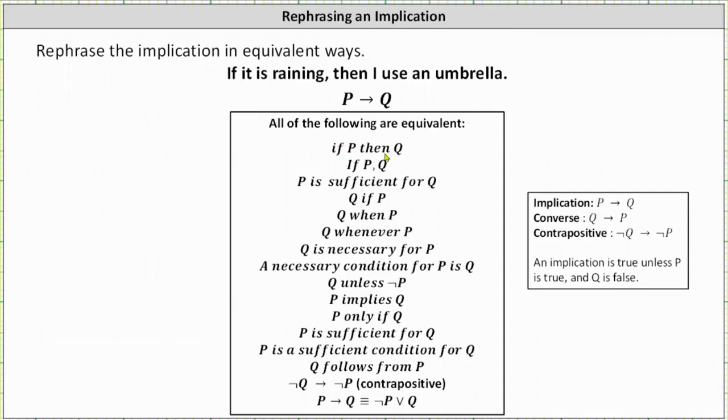If P then Q, if P comma Q, P is sufficient for Q, Q if P, Q when P, similarly Q whenever P, Q is necessary for P, a necessary condition for P is Q, Q unless not P, P implies Q, P only if Q, P is sufficient for Q, similarly P is a sufficient condition for Q, Q follows from P.